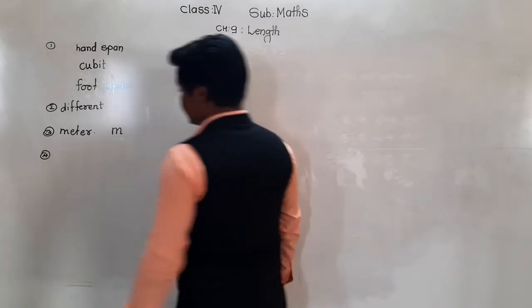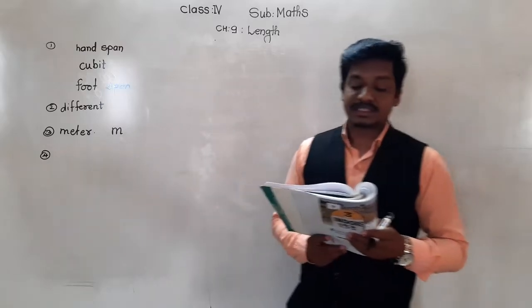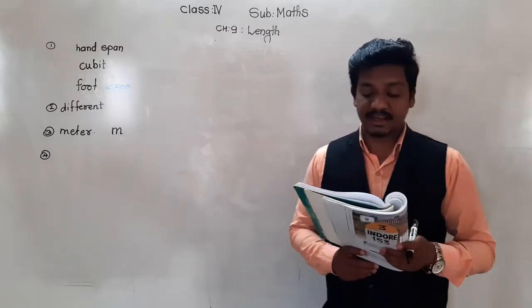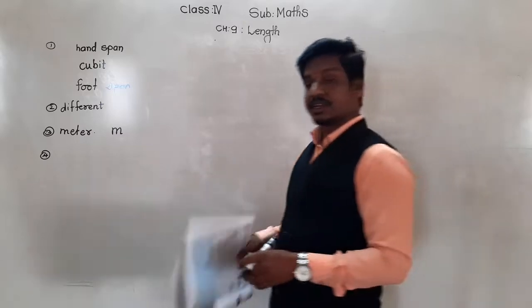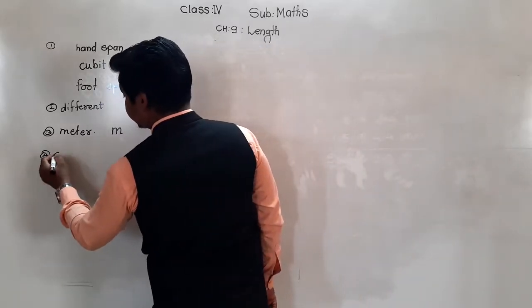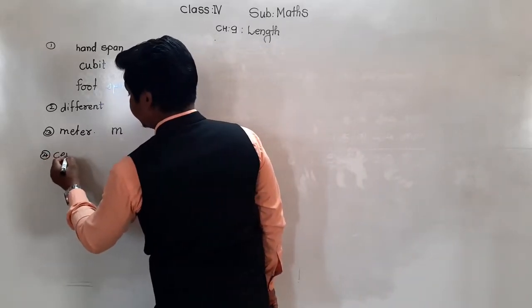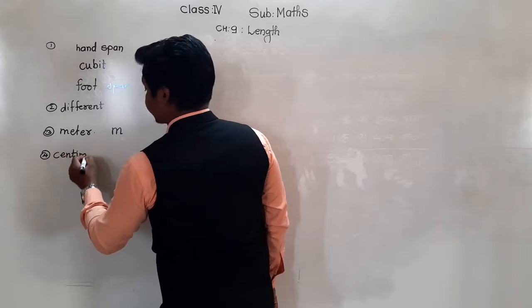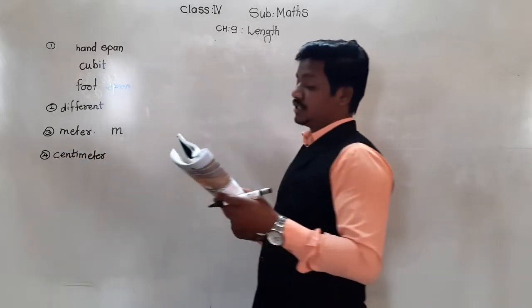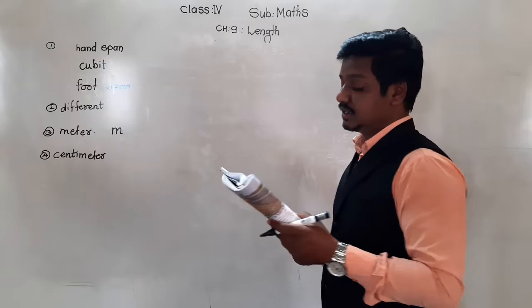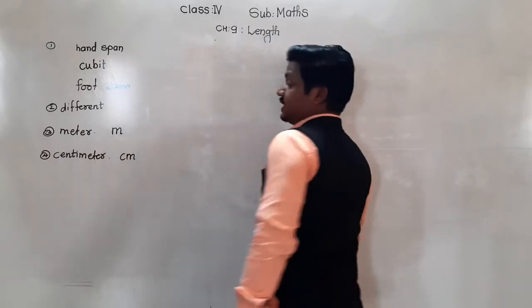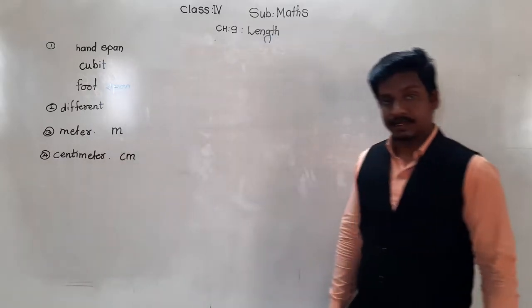To measure smaller lengths, we use centimeter, which is represented by CM. So for smaller lengths we use centimeter, denoted CM.